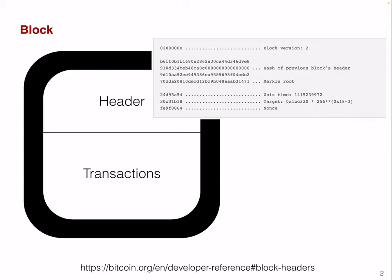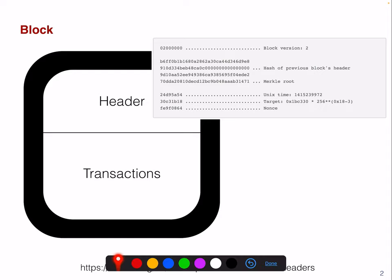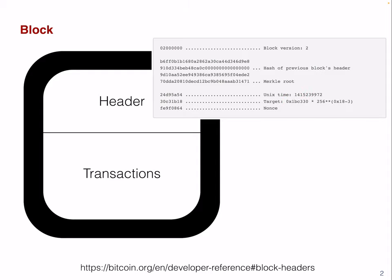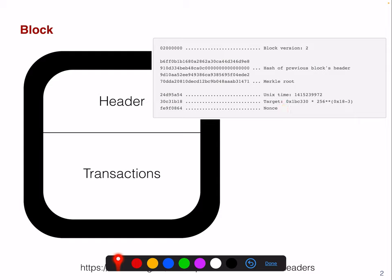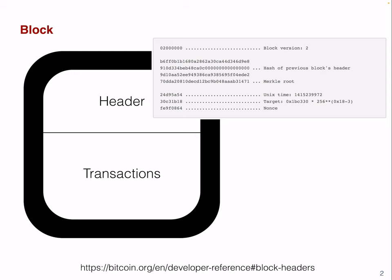Basically, the Merkle root represents all the transactions that are within that block. Then we have the Unix time, which is the timestamp of this particular block that the miner inserts. We also have a target, which represents difficulty — how hard it is to find this particular block. There's also a nonce, used for mining — it's a number you can increase so that when you hash the block you get a new hash value.